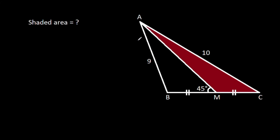In this video, we have been given that AB is 9, AC is 10, BM is equal to CM, and angle AMB is 45 degrees. We have to find the shaded area.